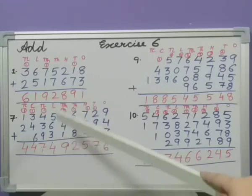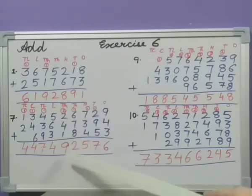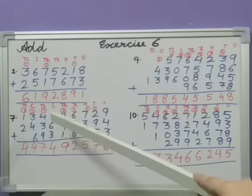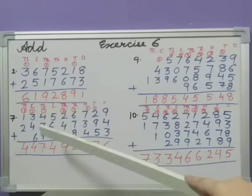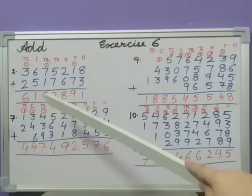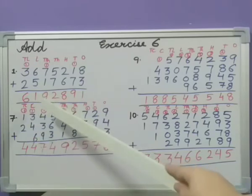No carrying over number, so we will just write 9 here. Then 5 plus 6 is 11, plus 3 that is 14, again 1 carried over. 4 plus 3 is 7, plus 9 is 16, plus 1 is 17. So 7 and 1 carried over.